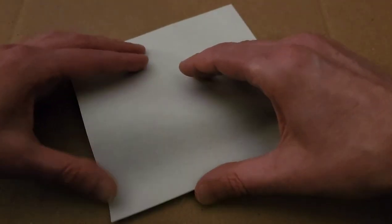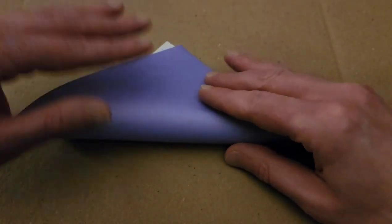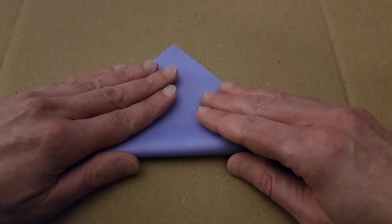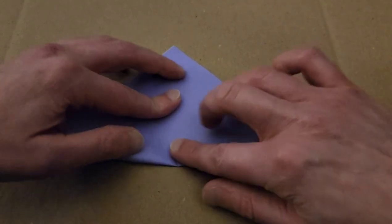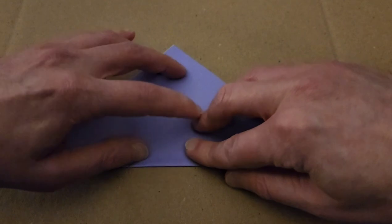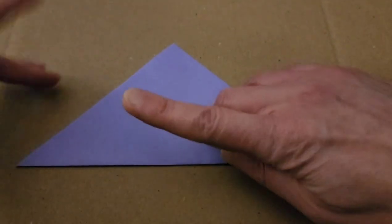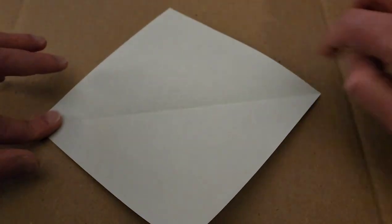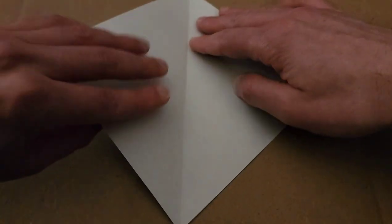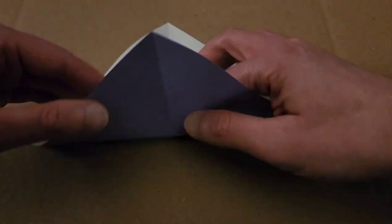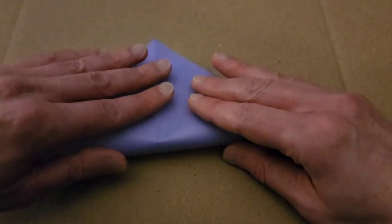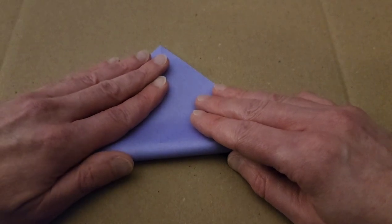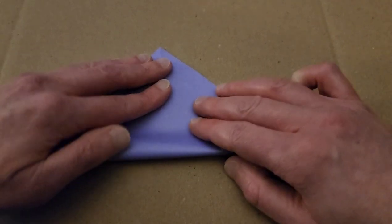and we're going to fold into triangles. Just fold it in half into a triangle, and then we're going to open and do the same thing in the opposite direction. So open, and turn, and fold.